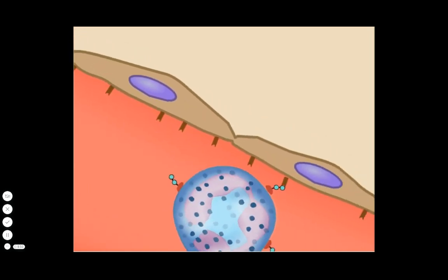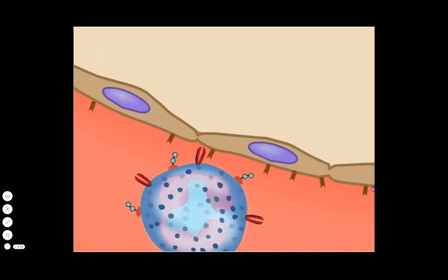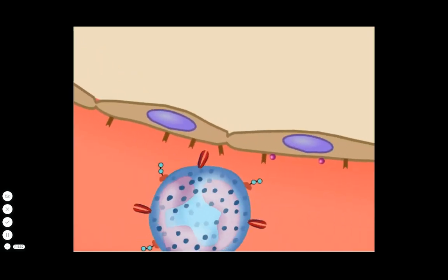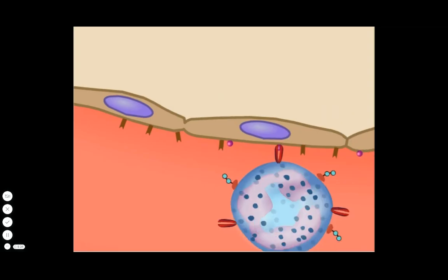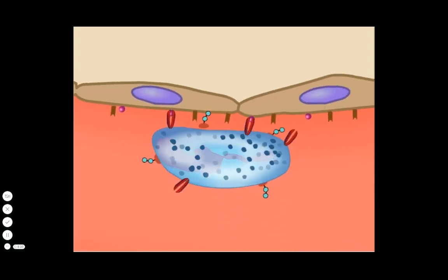Inflammatory signals trigger these rolling neutrophils to express adhesion molecules called integrins on their surface. The integrins lock onto adhesion molecules called ICAM-1 and VCAM-1 on endothelial cells. The tight adhesion stops the rolling and the neutrophils begin to stretch out along the endothelial surface.